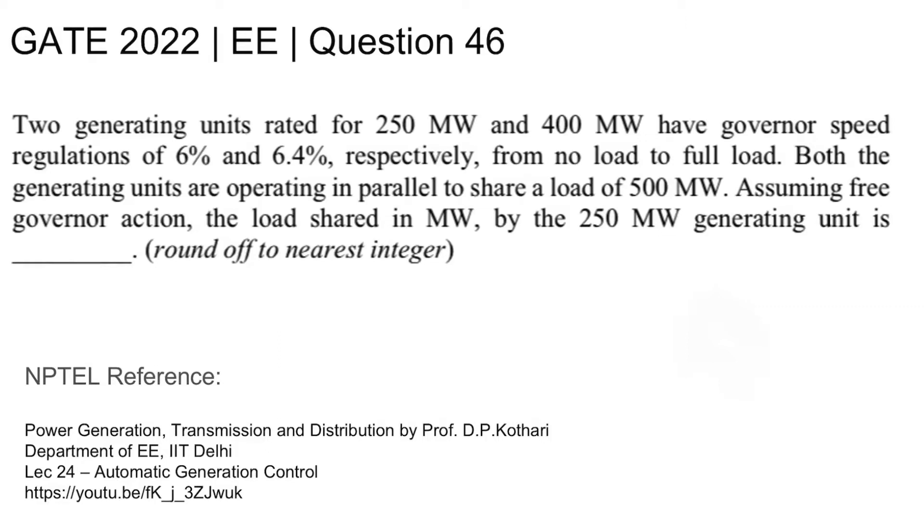This is GATE 2022 electrical question number 46. Two generating units rated 250 megawatt and 400 megawatt have governor speed regulations of 6 percent and 6.4 percent respectively from no load to full load. Both the generating units are operating in parallel to share a load of 500 megawatt.